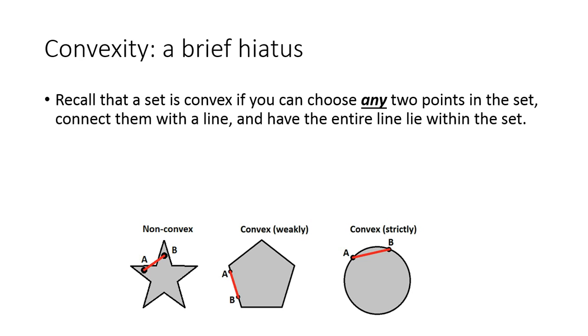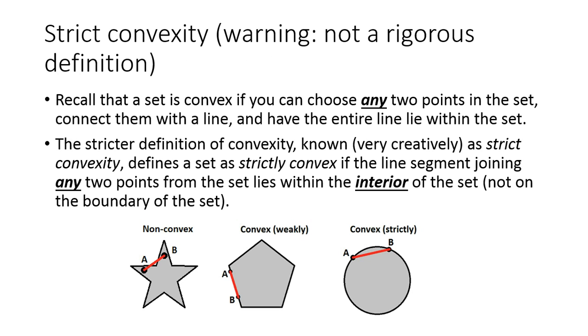This set on the far left is not a convex set because when I pick two points and draw a line, there are some cases where the two points that I choose will give me a line that falls outside of that region. So there's a stricter definition of convexity known as I said very creatively here, as strict convexity. This defines a set as being strictly convex if the line segment joining any two points from the set lies strictly within the interior of the set and not on the edges or on the boundary of the set.